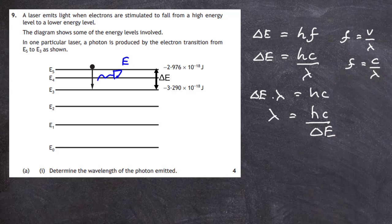When you look at an energy level diagram, don't worry about the minus signs. The minus sign is there just to indicate that's the amount of energy needed for the electron to escape the atom or to be ionized. For example, if you're an electron sitting at energy level E3, then you need 3.290 times 10 to minus 18 joules to escape the atom.